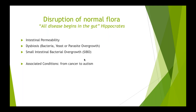As Hippocrates said, 'All disease begins in the gut.' Three main causes of disruption we'll cover today are: intestinal permeability (leaky gut), dysbiosis (imbalance of good to bad bacteria, or overgrowth of bacteria, yeast, or parasites), and small intestinal bacterial overgrowth (SIBO). This disruption of normal gut flora has been associated with conditions ranging from cancer to autism. I often see it with autoimmune conditions like Hashimoto's, Graves' disease, Crohn's, ulcerative colitis, and lupus.